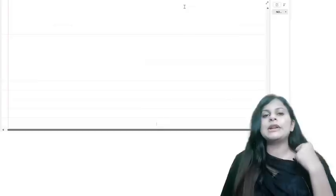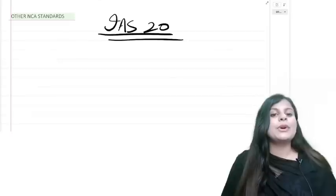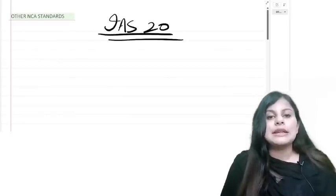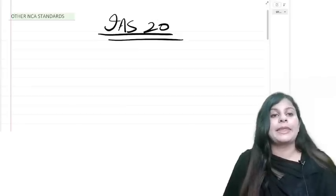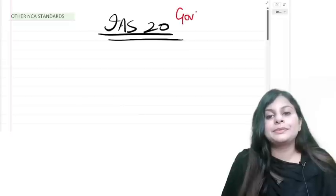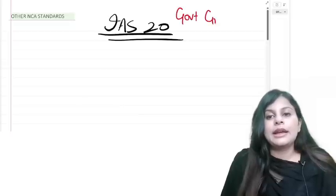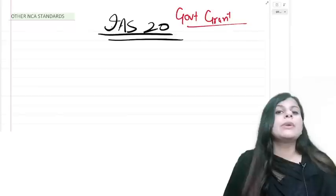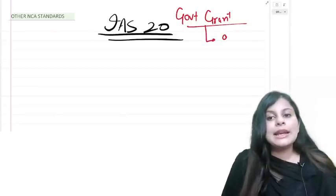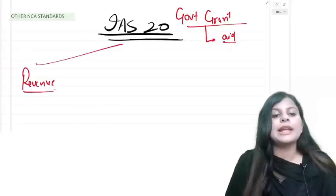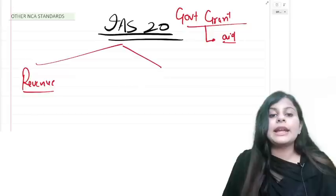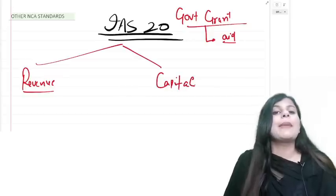That covers IAS 38, IAS 40, and IAS 16 — three important non-current asset standards. Now let's move to IAS 20, Government Grants. A government grant is aid given by the government either to meet an expense (revenue grant) or to buy or develop an asset (capital grant). A grant is only recognized when the conditions attached to it are fulfilled.